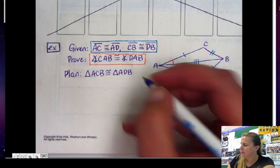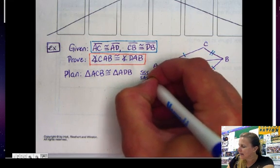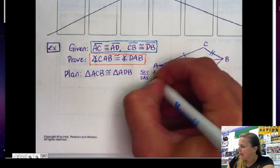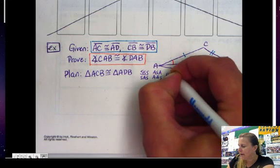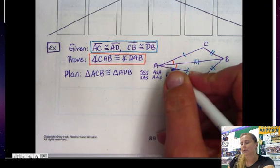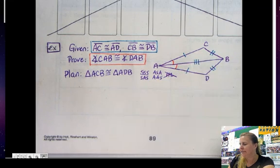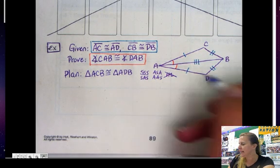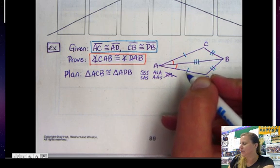Well, remember my choices are side-side-side, side-angle-side, angle-side-angle, angle-angle-side, and hypotenuse leg. So I'm looking at this, and I don't see any right angles, so I'm going to automatically cross out hypotenuse leg. I also notice that I don't have any angles given to me.